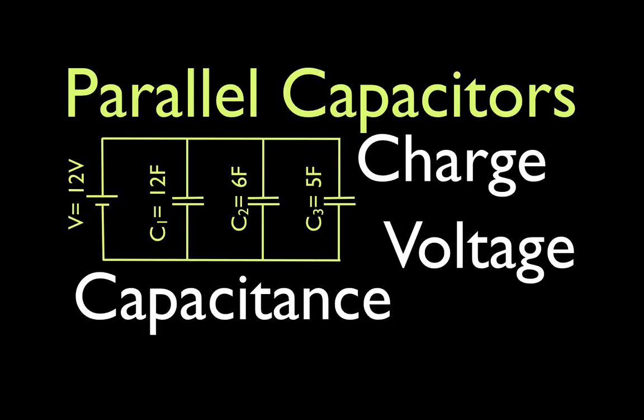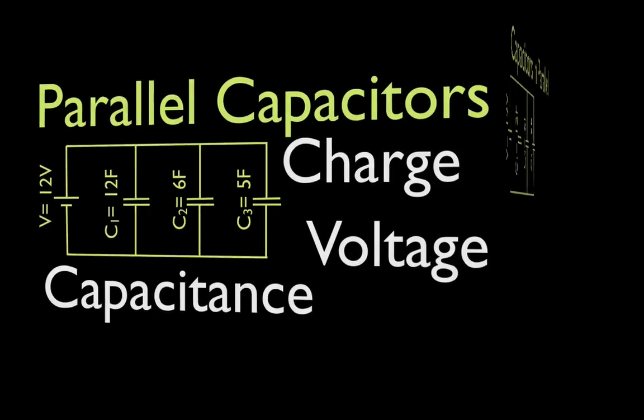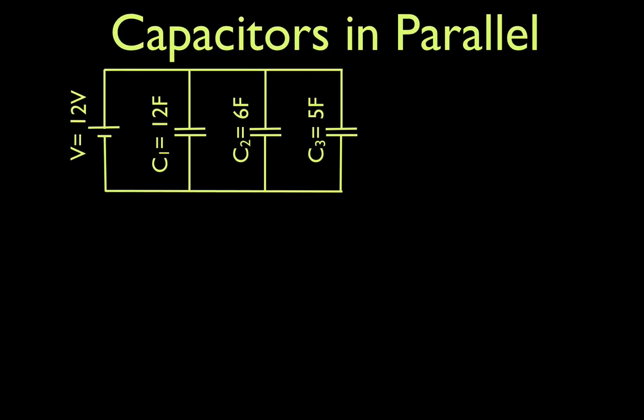In today's video, I'm going to go over how to determine the charge, the voltage, and the equivalent capacitance for capacitors in parallel. This is the circuit we're going to use, and I'll go through all of this one step at a time. These rules and calculations all apply regardless of how many capacitors we have in parallel — whether we have one, two, three, four, five, or many more, we apply the same rules and calculations the same way.